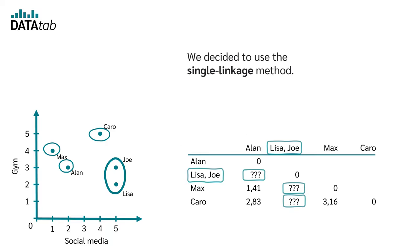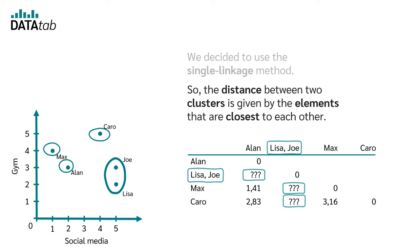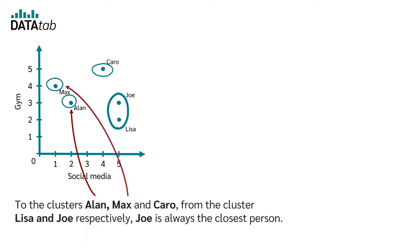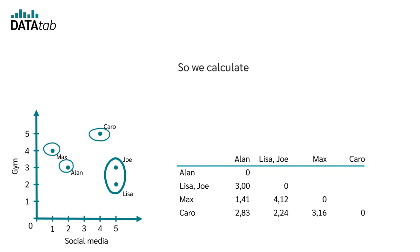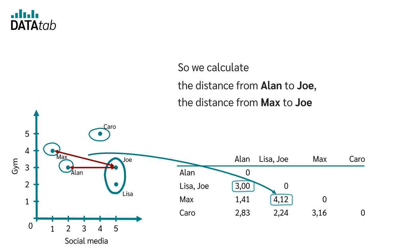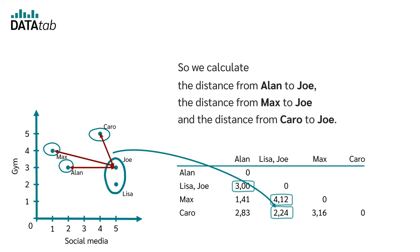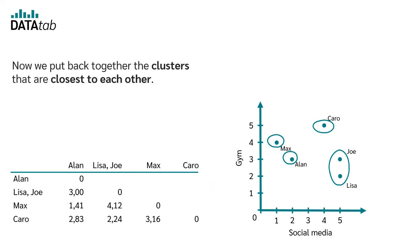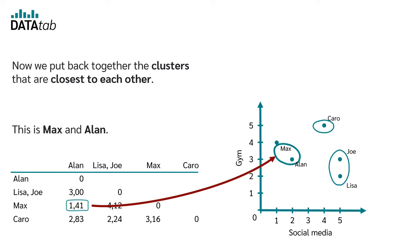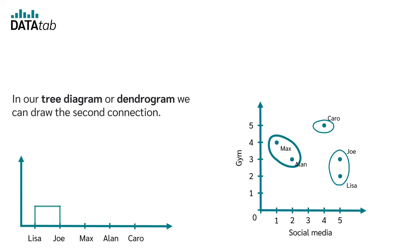Now we need to update our distance matrix. We decided to use the single linkage method, so the distance between two clusters is given by the elements closest to each other. From the cluster Lisa and Joe, Joe is always the closest person to Alan, Max, and Carol. So we calculate the distance from Alan to Joe, from Max to Joe, and from Carol to Joe. Now we merge the clusters that are closest — this is Max and Alan. In the dendrogram, we draw the second connection.